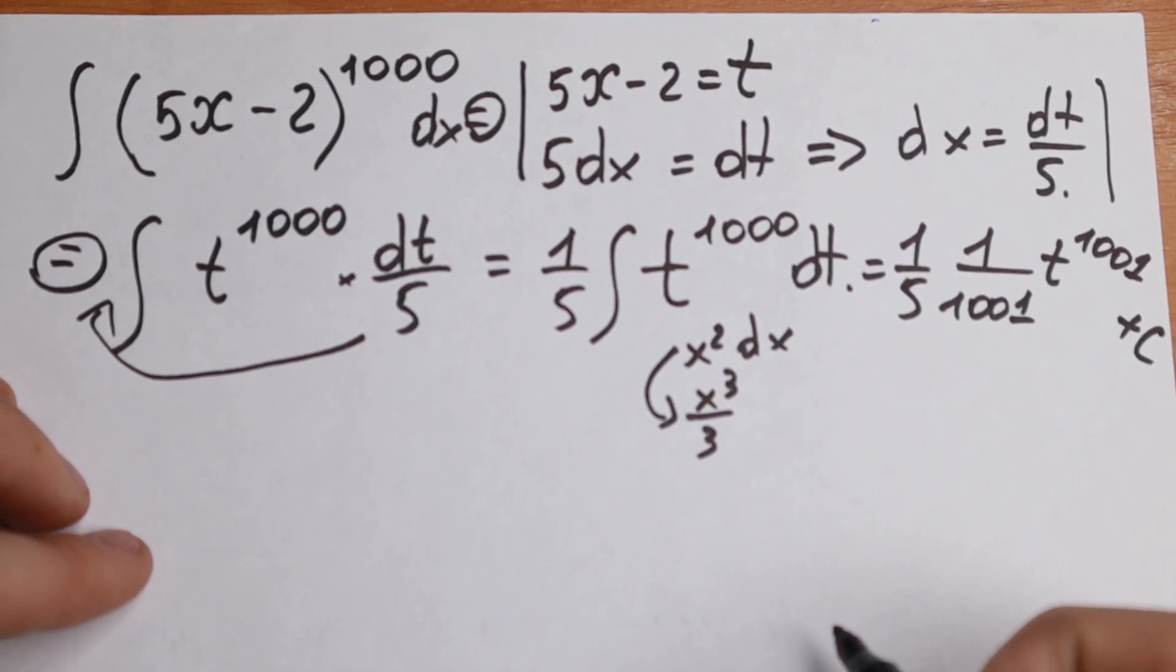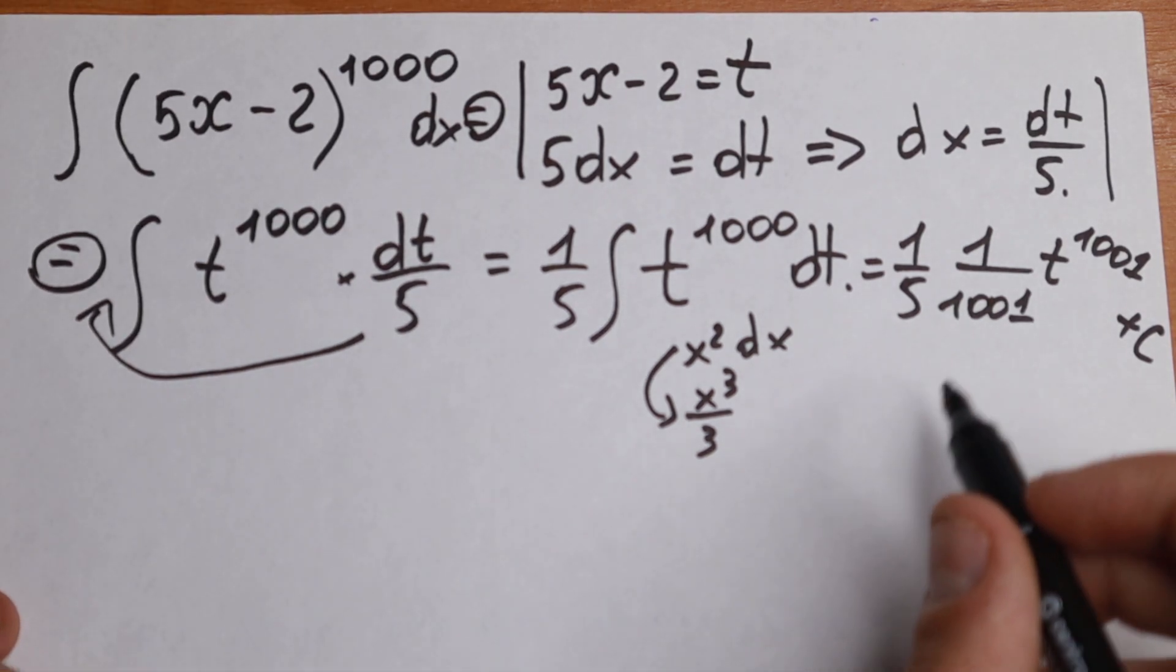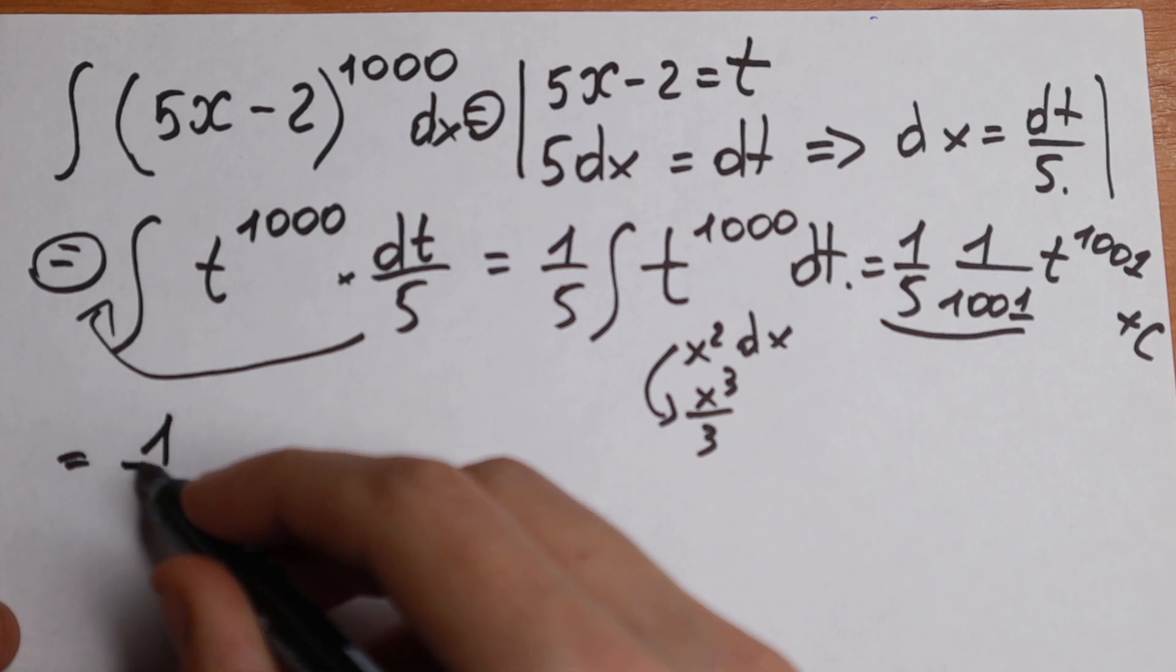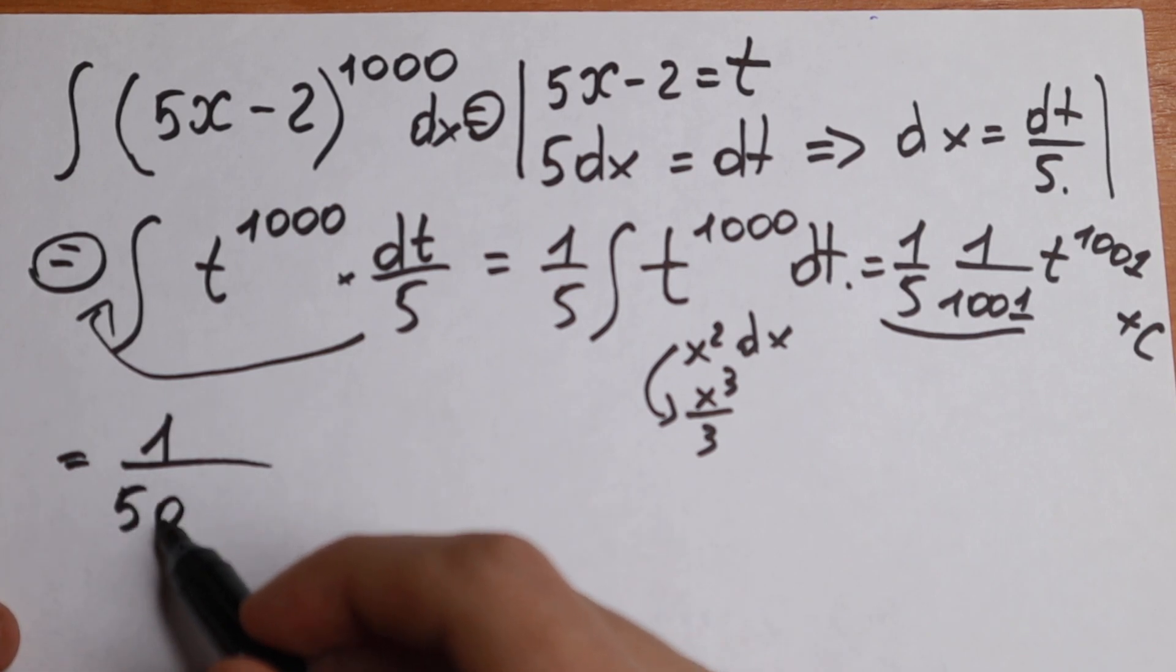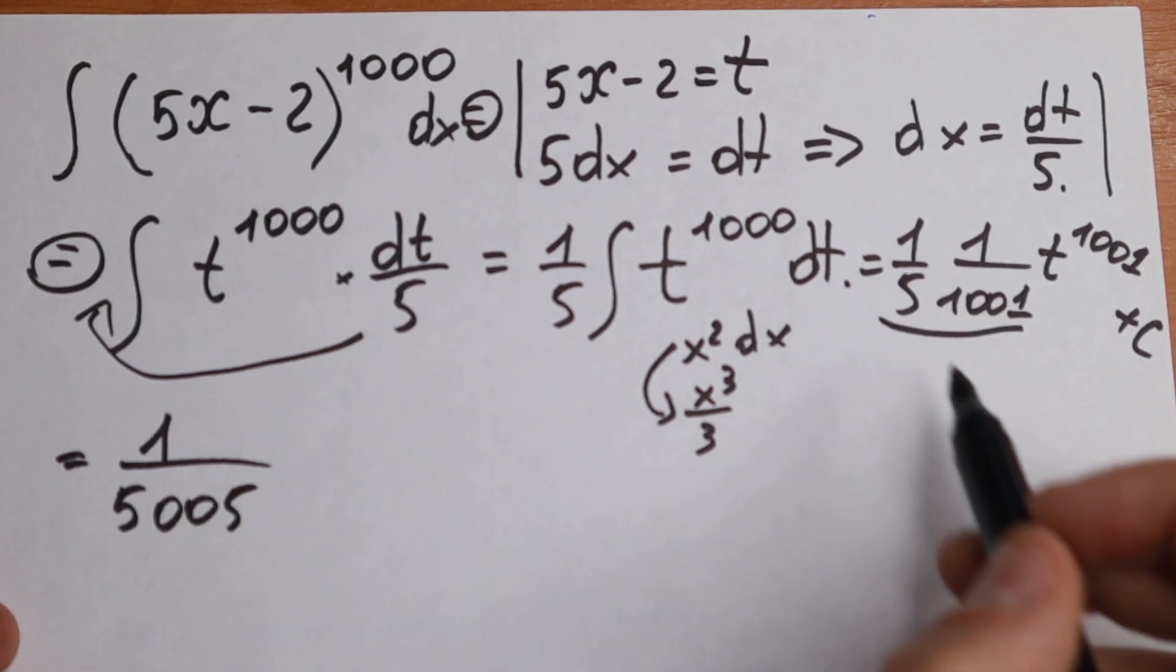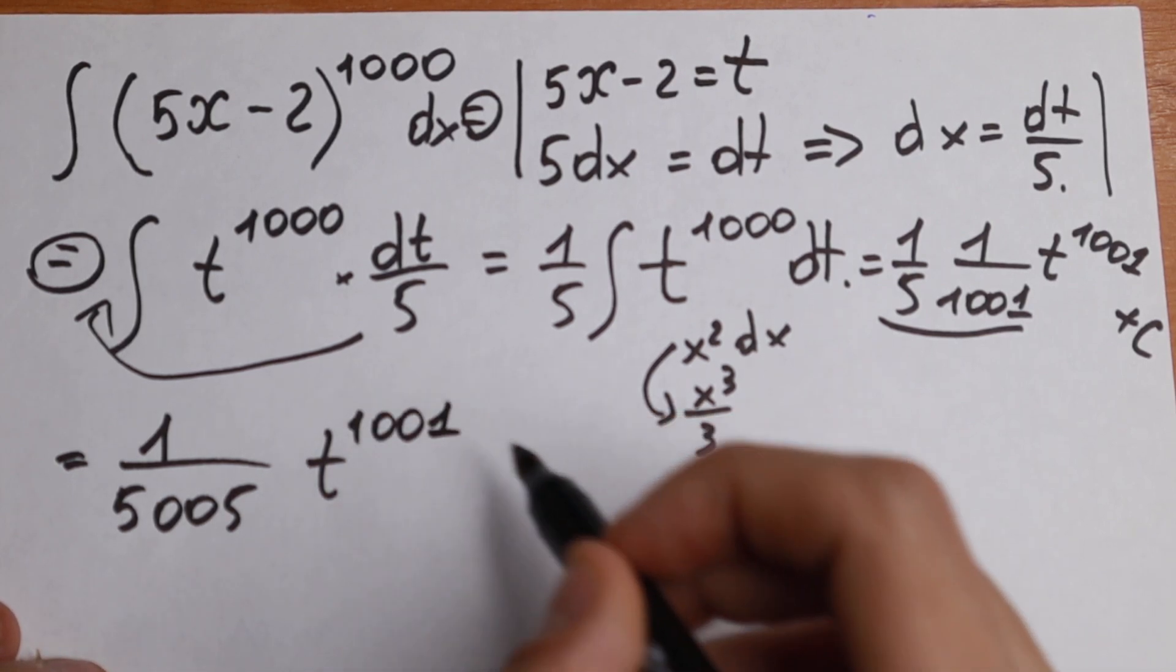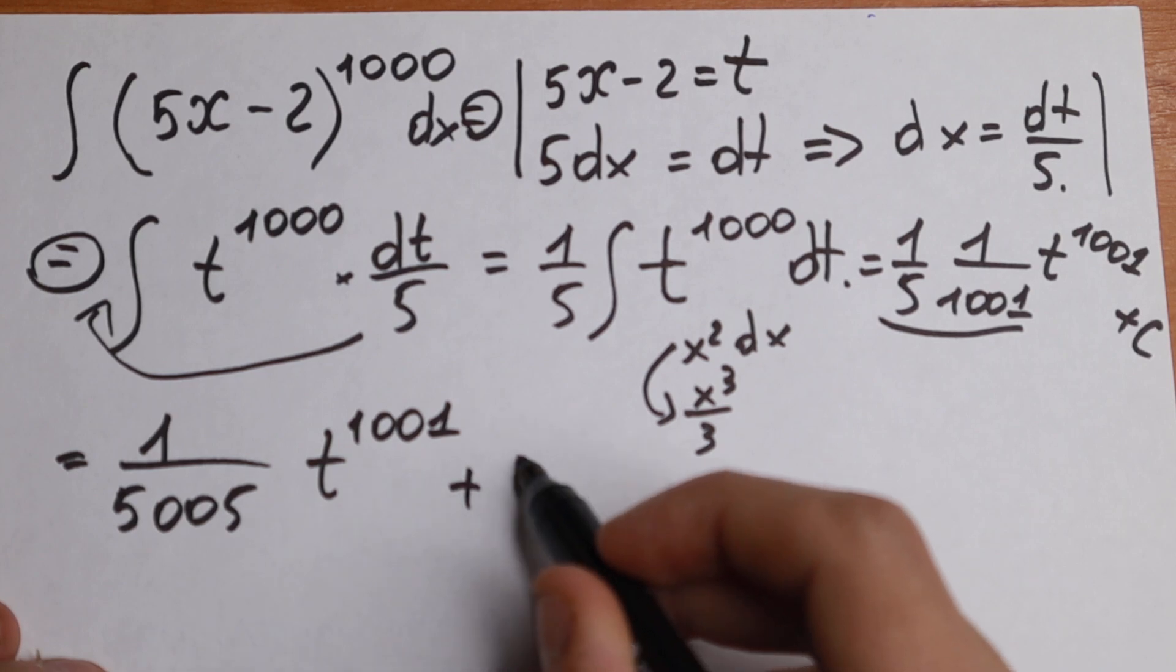So this will be our integral. Of course, we can simplify this a little bit. Let's multiply our constants. We will have 1 over 5005. This is our constant, and we have t to the power 1001 plus c.